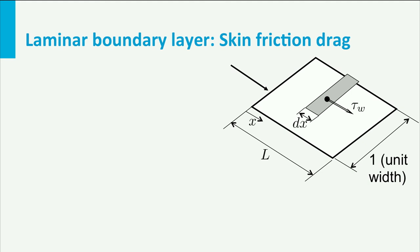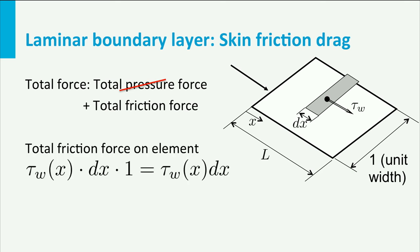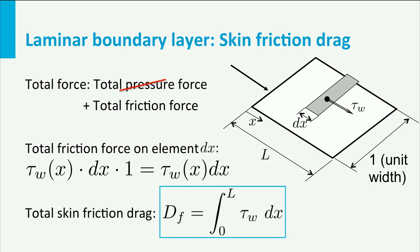Now let us look at a flat plate with length L and a width of 1 meter. At distance x from the leading edge, we have a small strip of the plate with length dx in flow direction. The total force on the entire plate is the pressure force plus the friction force. Since the plate is flat and very thin, and under zero pressure gradient, we have no pressure forces. The friction force on the element dx is tau times the area, which is dx times 1. The total skin friction drag on the plate is the integral from x equals 0 to x equals L of tau times dx.